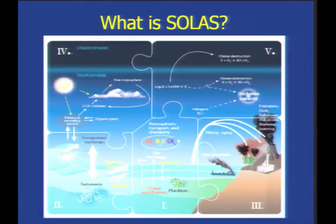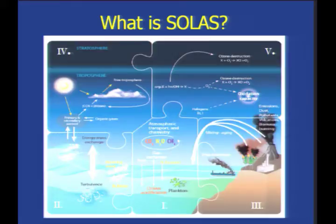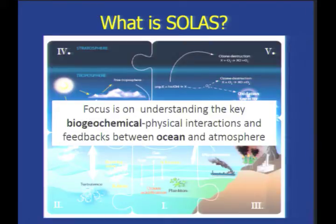Theme one, where most of the overlap with OCB occurs, is called greenhouse gases in the ocean — CO₂, N₂O, and methane. Essentially if you study any aspect of how the ocean affects CO₂, you fit into theme one. Theme two covers air-sea exchange of mass and energy. Theme three addresses atmospheric deposition and emissions from land, including ship emissions, affecting the ocean. Theme four looks at cloud chemistry, ecosystems, and aerosols. Theme five is almost the reverse of theme three — how ocean emissions affect atmospheric chemistry.